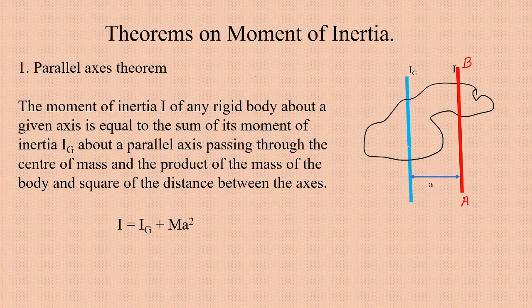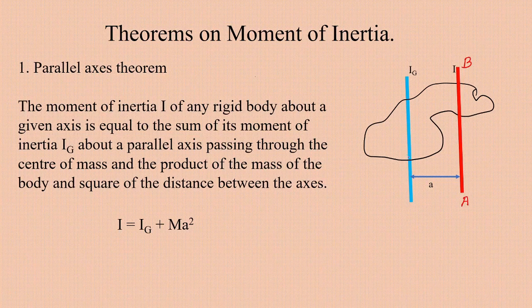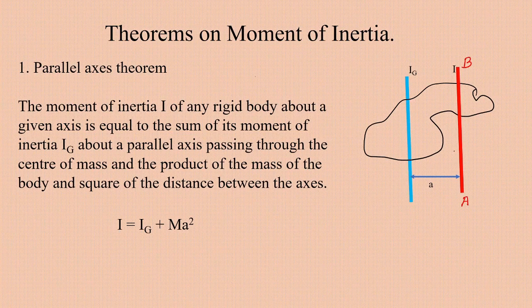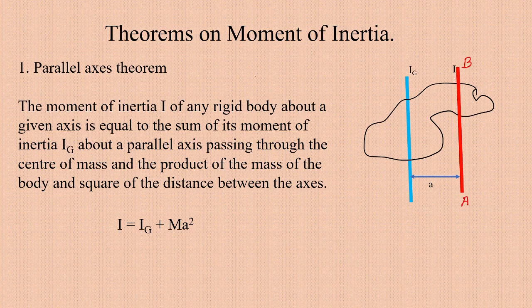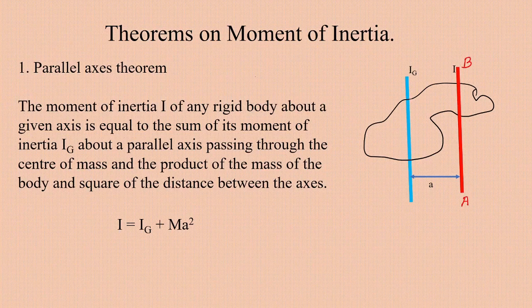Then, according to the parallel axis theorem, if we know the moment of inertia of a given body about an axis passing through the center of gravity, then we can find the moment of inertia about any parallel axis — parallel to the axis passing through the center of mass. The parallel axis theorem gives a simple relation to find the moment of inertia about any parallel axis AB, provided we know the moment of inertia about the parallel axis passing through the center of mass.